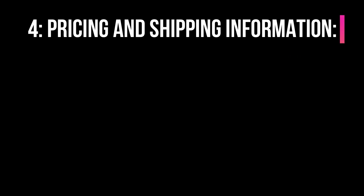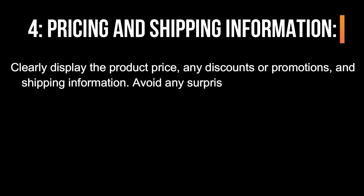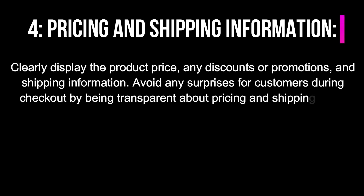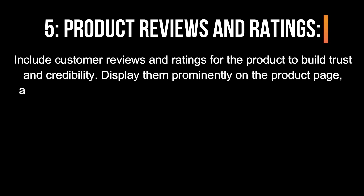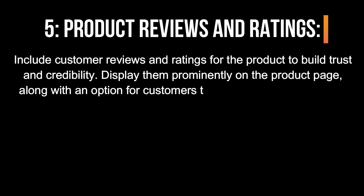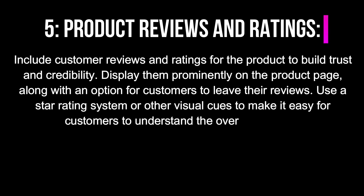4. Pricing and Shipping Information. Clearly display the product price, any discounts or promotions, and shipping information. Avoid any surprises for customers during checkout by being transparent about pricing and shipping costs up front. 5. Product Reviews and Ratings. Include customer reviews and ratings for the product to build trust and credibility. Display them prominently on the product page, along with an option for customers to leave their reviews. Use a star rating system or other visual cues to make it easy for customers to understand the overall feedback.